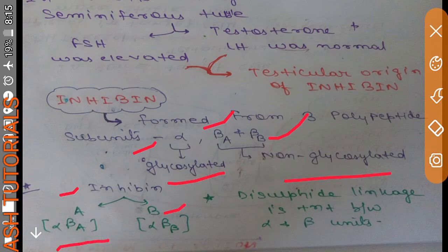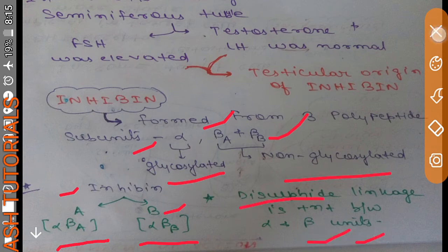And inhibin B is formed by alpha combining with beta B. Alpha and beta are linked by disulfide bonds.